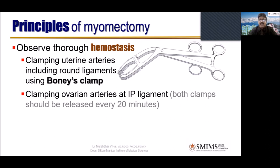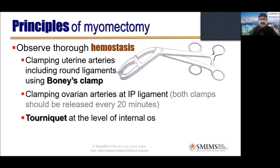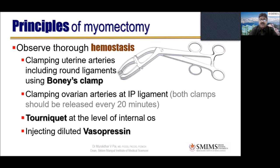You can also clamp the ovarian arteries at the IP ligament — both clamps should be released every 20 minutes to prevent the anastomosis at the corneal region. This prevents blood supply coming from the ovarian arteries directly from the aorta. So you are clamping both the uterine arteries and the ovarian arteries. Some colleagues prefer to put a tourniquet at the level of internal os, but you must first dissect the bladder before putting this tourniquet. Also, injecting diluted vasopressin is effective — in laparoscopic myomectomy, vasopressin is injected generously to make the uterus appear almost white.